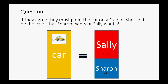But what about this question? If they agree that they must paint the car only one color — they're not going to paint 60% of the car one color and 40% the other — should it be the color that Sharon wants or the color that Sally wants? Common sense says that if it's an either-or question about an asset you share, the one that sacrificed more, contributed more, and paid more is the one that gets the question settled in their favor. So when it comes to painting the car one color, Sally would get the color that she wants. We all feel that's fair.